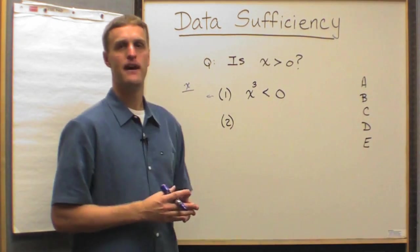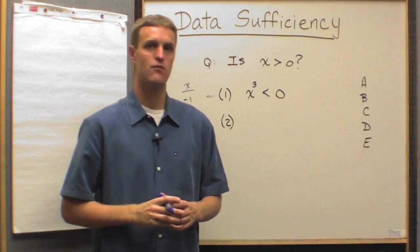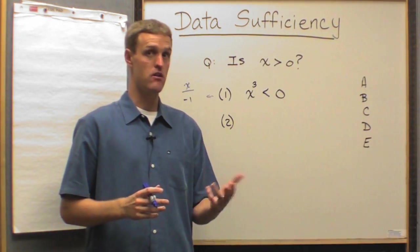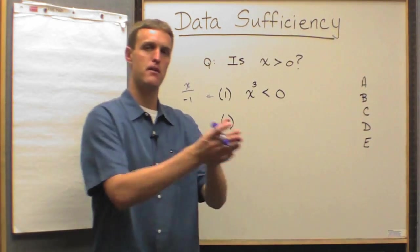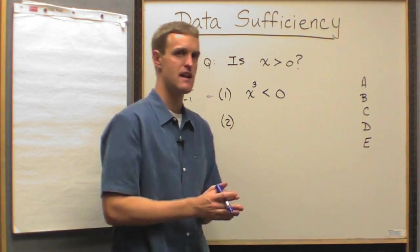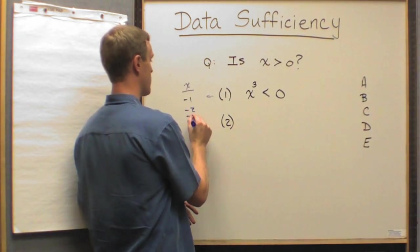So, it's got to be a negative number. X could be negative one, for example, because what's negative one cubed? Well, negative one squared, negative one times negative one is positive one, but then you multiply it by negative one again, it turns negative. Negative one would work. Negative two would work. Negative three would work.